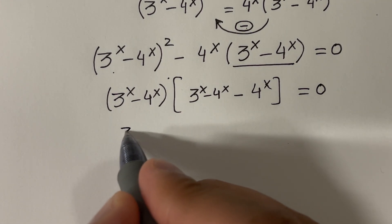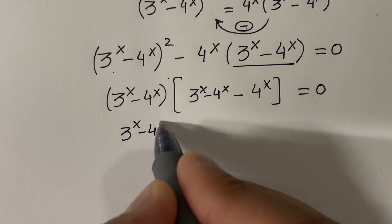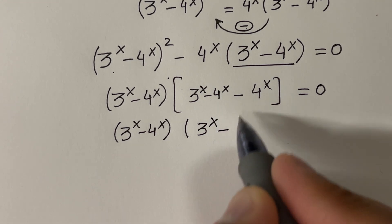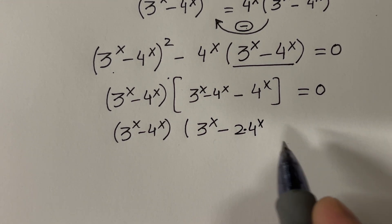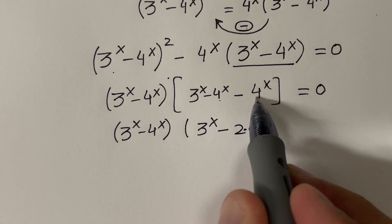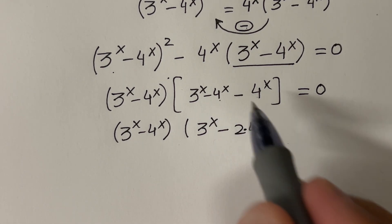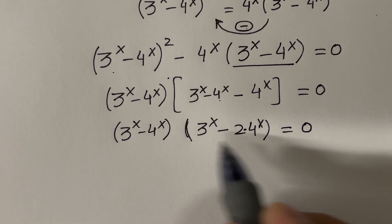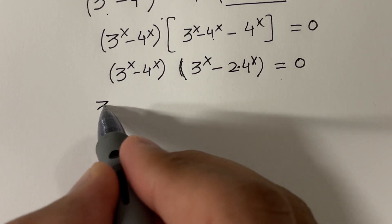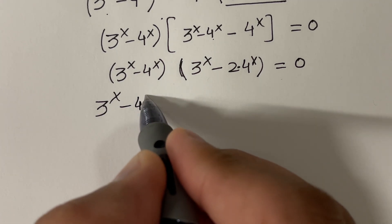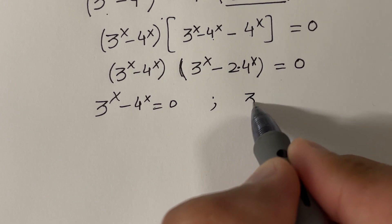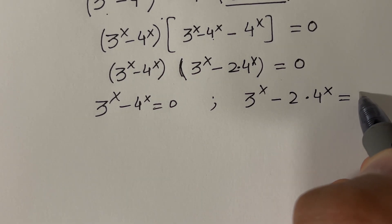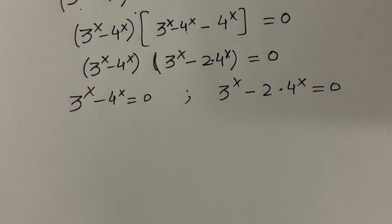Now let's simplify. Keeping the first factor as it is, if we simplify the second factor we get 3^x minus 2 times 4^x, because we have 4^x appearing twice with the same sign. Since the product of these two factors is 0, we can set each of them equal to 0 to find the values of x.